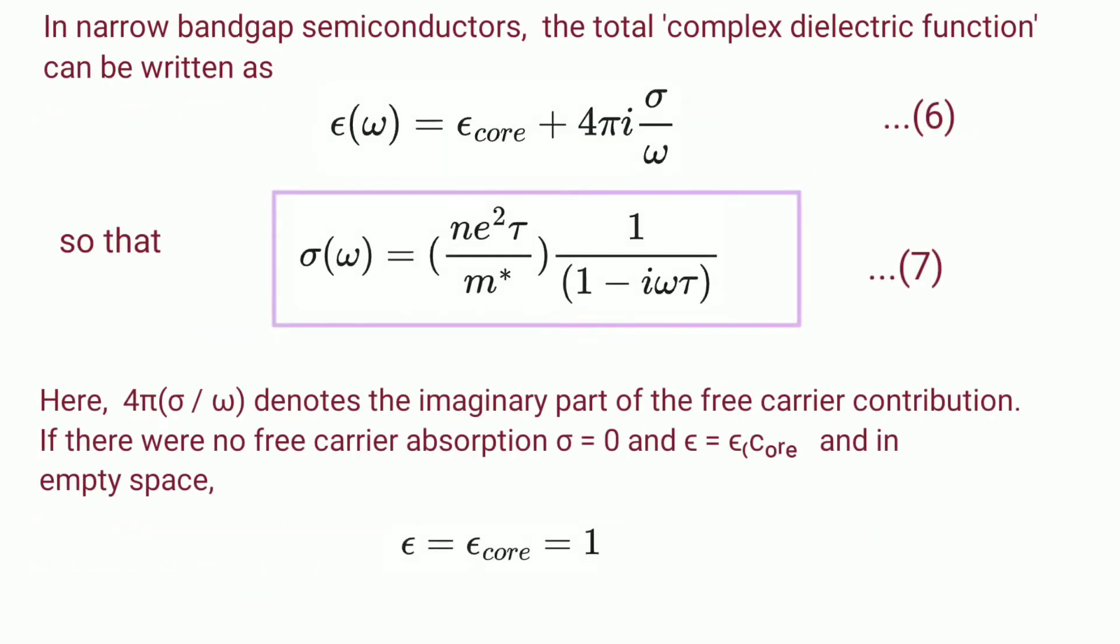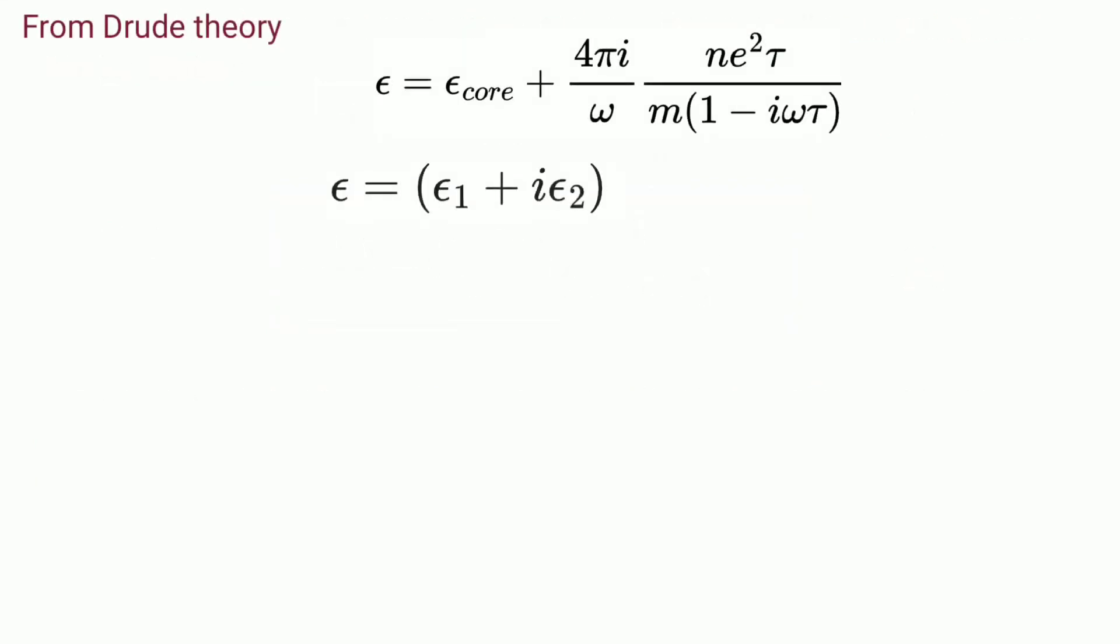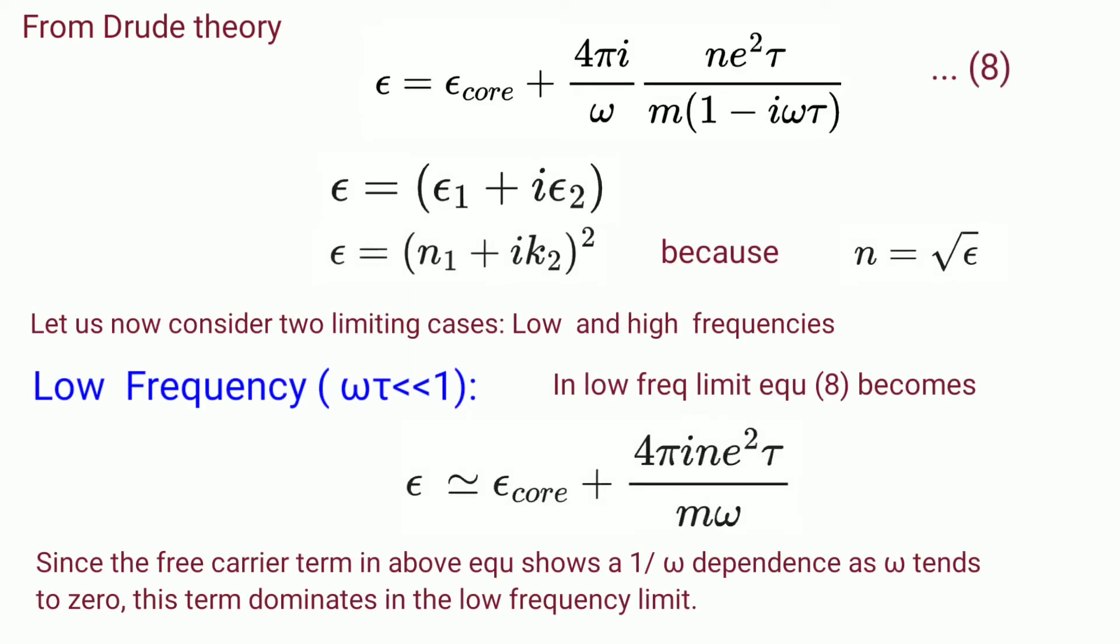In narrow band semiconductors the total complex dielectric function can be written as ε = ε_core + 4πiσ/ω, so that σ(ω) = ne²τ/(m_effective × 1/(1-iωτ)). Here 4πσ/ω denotes the imaginary part of the free carrier contribution. If there were no free carrier absorption, σ will be 0 and ε will equal ε_core, and in empty space ε_core = 1. The dielectric function ε can be written as the sum of two parts: real and imaginary.